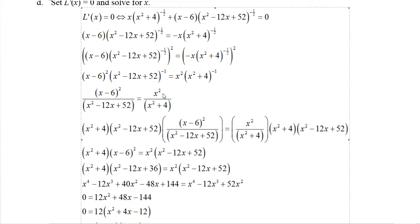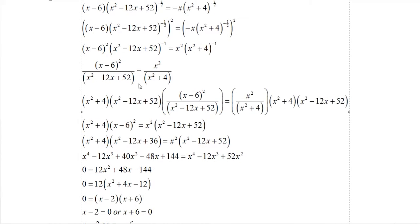Rewriting these as fractions, this is x minus six squared over this quadratic equals x squared over this quadratic here. Now I'm going to cross multiply, or in other words multiply both sides by both of these denominators.